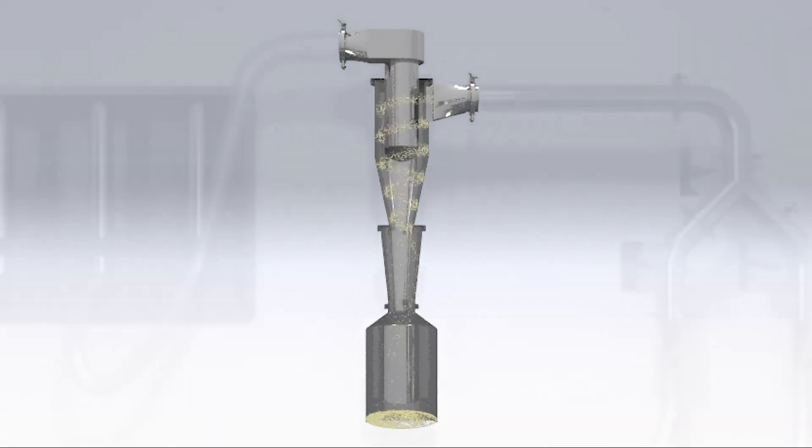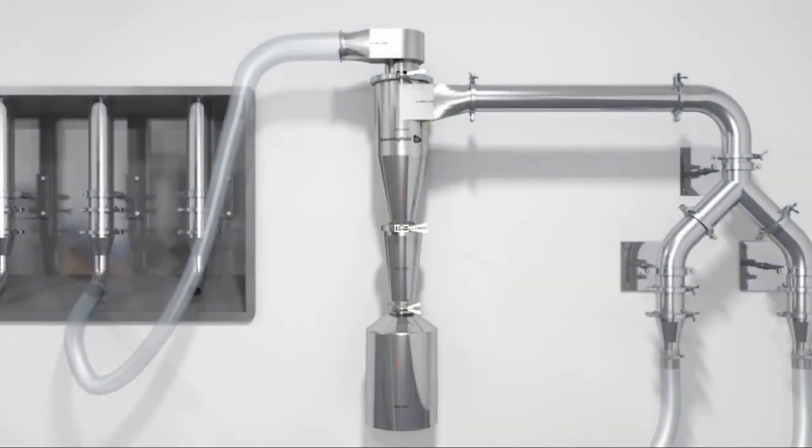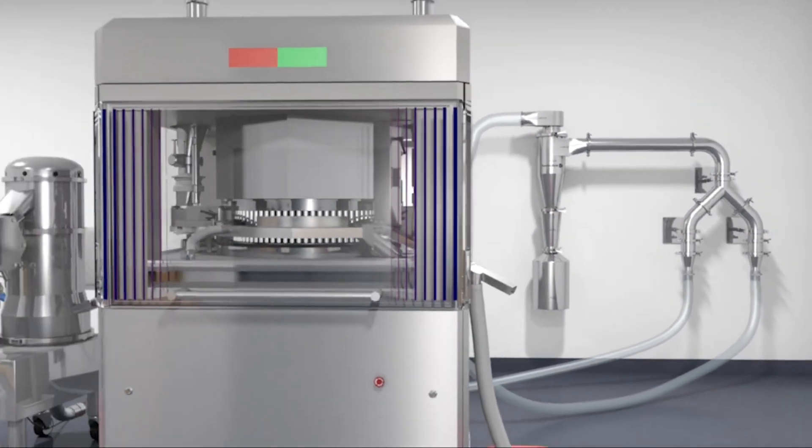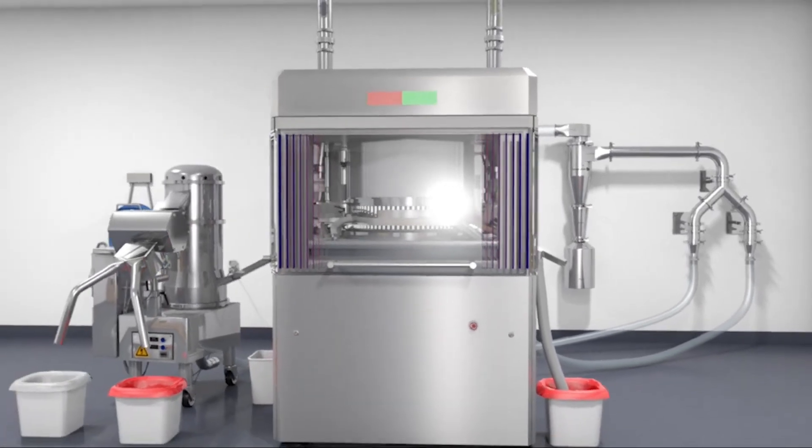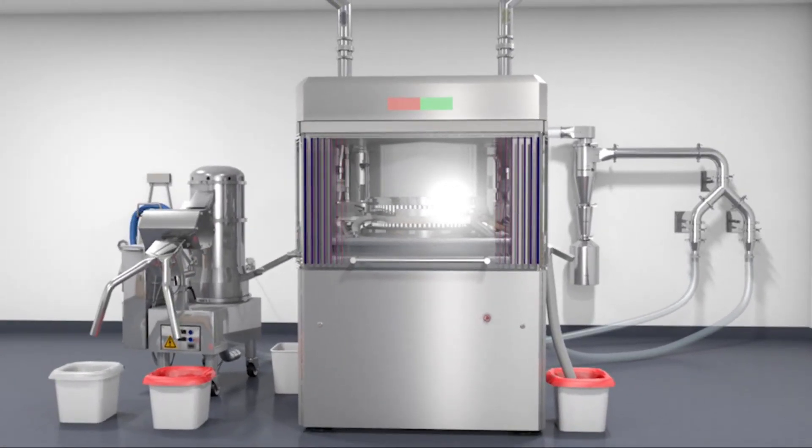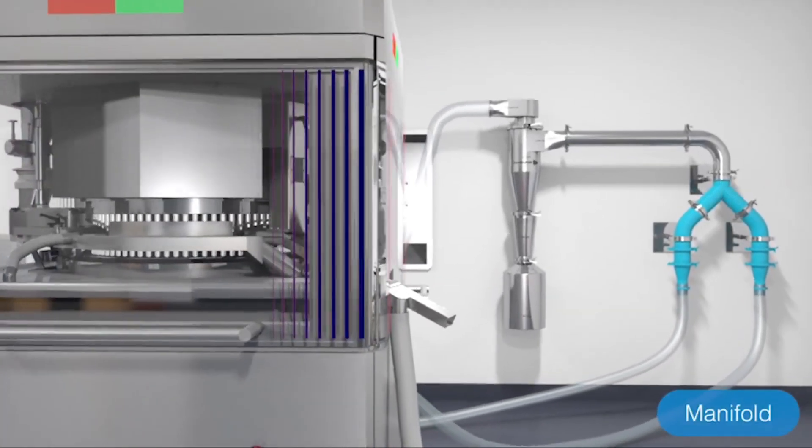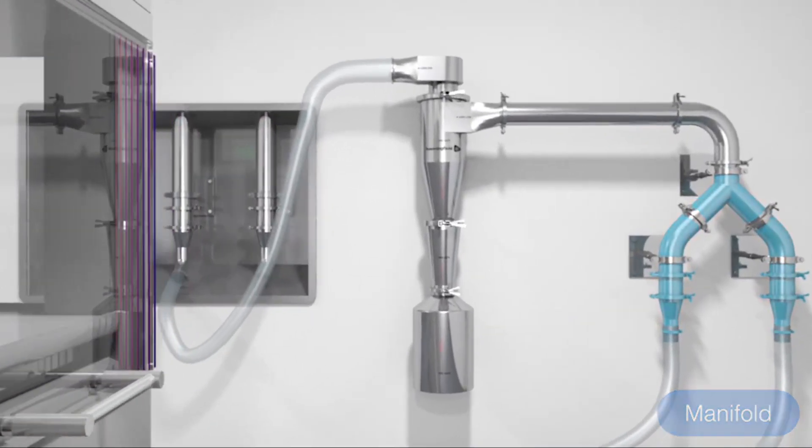Many modern tablet presses have multiple extraction points or incorporate a tablet deduster. Likewise, a capsule filling machine will often integrate a capsule polishing machine. The cyclone is able to accommodate these multiple airflows with the use of a manifold for collection from multiple points.